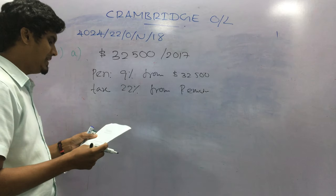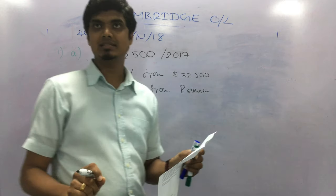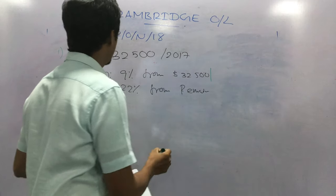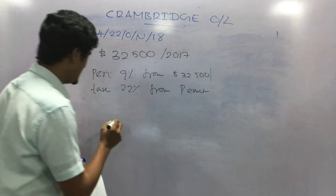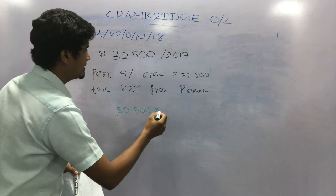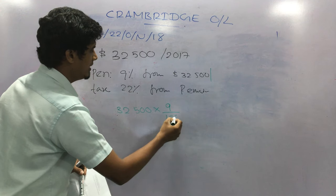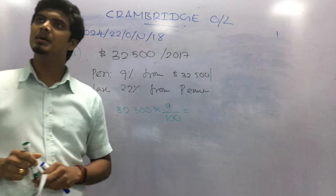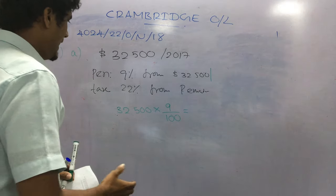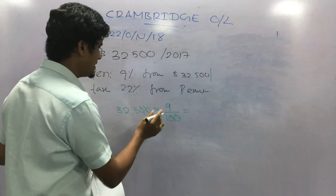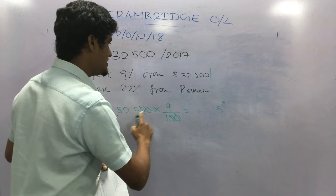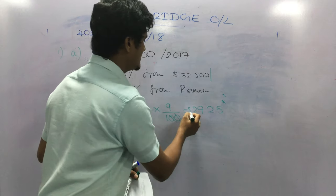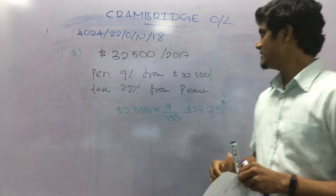We need to calculate the amount left after paying his pension and taxes. First, we find the amount paid for pension: 9% of $32,500. This is a paper 22, so you can use a calculator. Working through the simplification: 9% of 32,500 gives us the pension value of $2,925, which is the amount paid for pension.